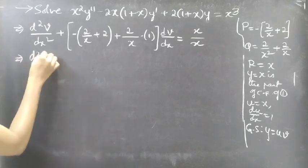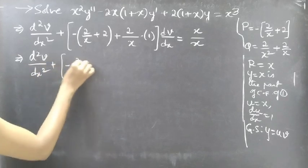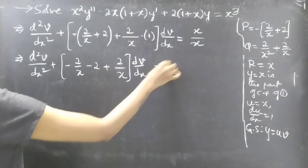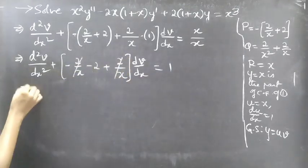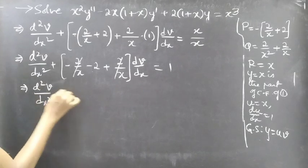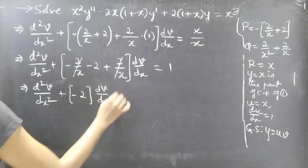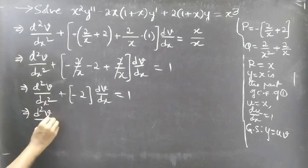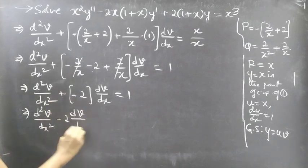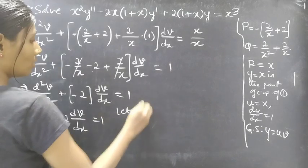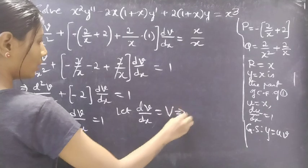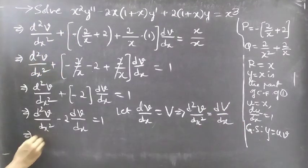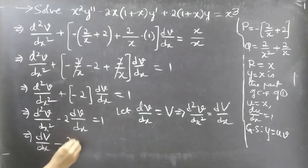Then we get: d squared v by dx squared plus (minus 2 over x minus 2 plus 2 over x times 1) times dv by dx equal to x over x equal to 1. Here minus 2 over x and plus 2 over x cancel, and we get: d squared v by dx squared minus 2 times dv by dx equal to 1. Now let capital V equal to dv by dx, and this equation becomes: dV by dx minus 2V equal to 1, which is a linear equation in V and x.